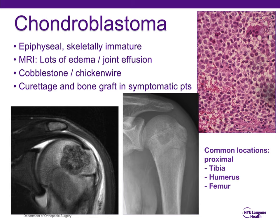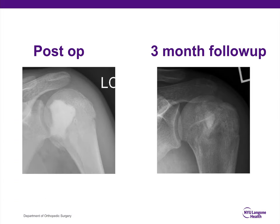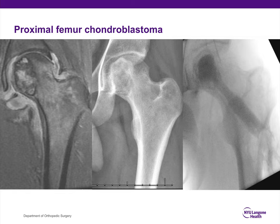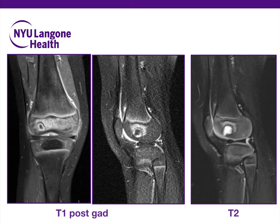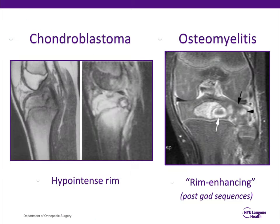This patient underwent a trans-physeal curettage and grafting with a bone substitute. This is another case done recently using a similar technique through a lateral cortical window, curettage and grafting with bone substitute. It's important to understand symptoms and age and how they come together. For example, a three-year-old female presenting with limping with a lesion seen on X-ray — MRI showed rim enhancement on post-gadolinium T1 with edema rather than joint effusion. The diagnosis here is actually osteomyelitis rather than chondroblastoma, as the rim-enhancing lesion and the age of the patient are more suggestive of osteomyelitis.